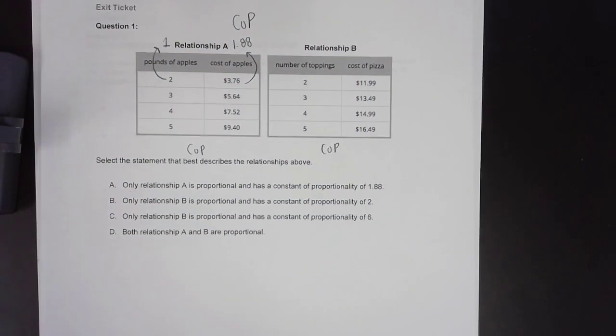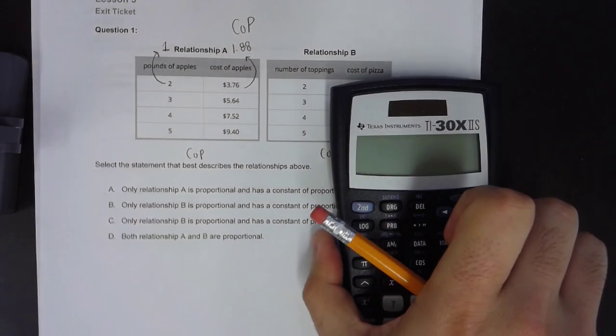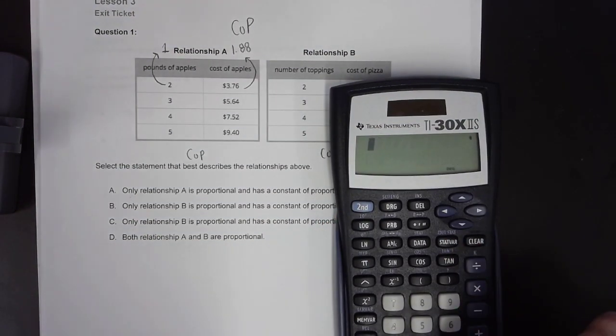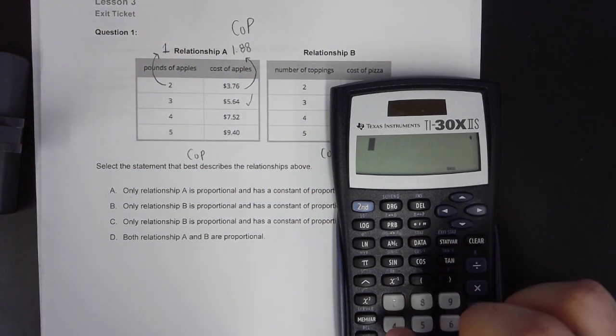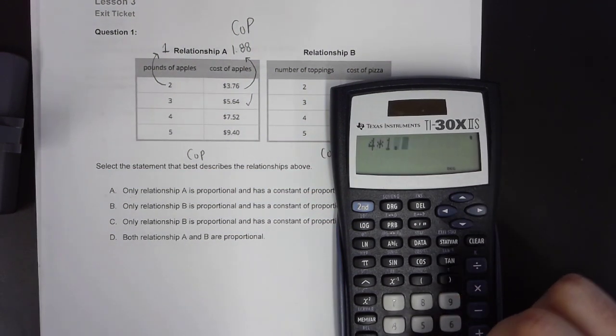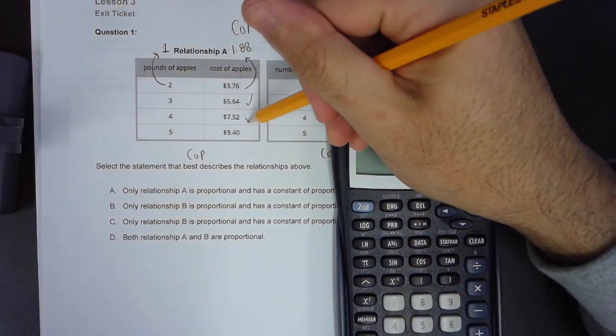Now, if that was the case, I need to multiply all of my pounds of apples by 1.88 in order to get to my cost of apples. If I had a calculator and I determined 3 times 1.88, that got me to $5.64, which is what I'm looking at. If I did 4 times 1.88, I got to $7.52, which again is on my data table.